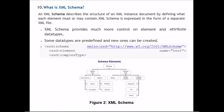What is XML Schema? XML Schema describes the structure of an XML document by defining what each element must or may contain. XML Schema is expressed as a separate XML file (with .XSD extension). It provides much more control over element and attribute data types compared to DTD. Some data types are pre-defined, and new ones can be created. The schema element defines simple type elements, complex type elements, and all the things a schema can define.